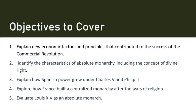This era saw the rise of capitalism and the growth of a global economy. We will also be identifying the characteristics of absolute monarchy, including the concept of divine right. Absolute monarchy is a system of government where the monarch holds supreme authority and power, typically unchecked by other institutions.